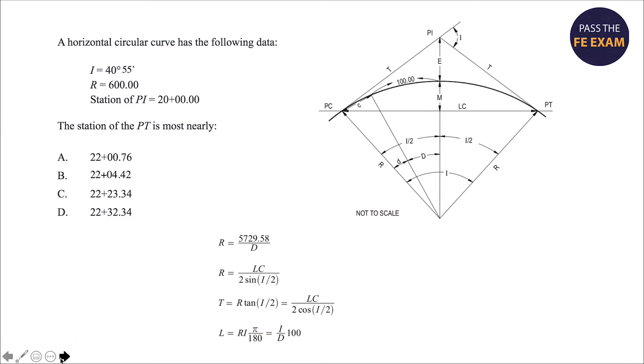What is given to us? I, or the deflection angle, which is sometimes designated as delta depending on the book you're looking in, is provided. The point of tangent intersection, or PI, is provided, as well as the radius.